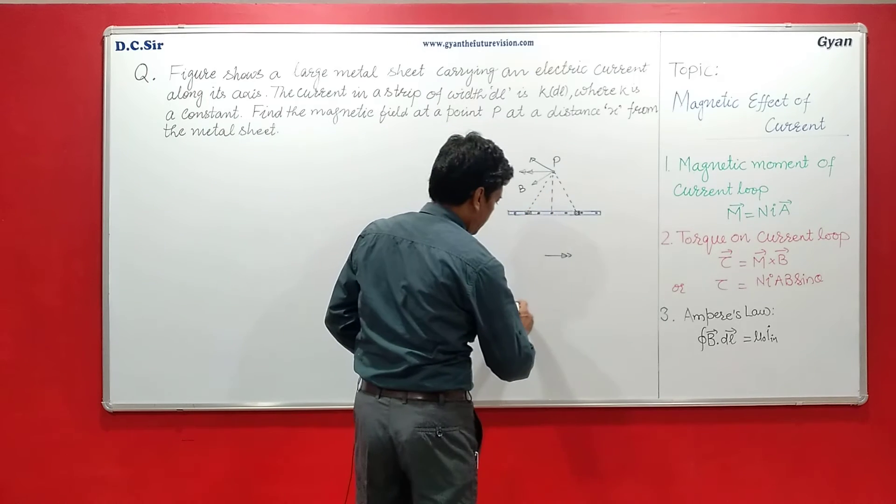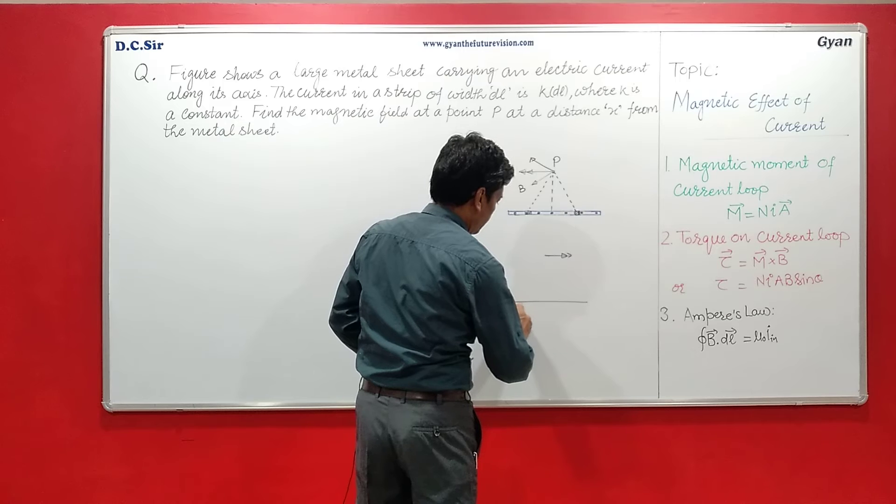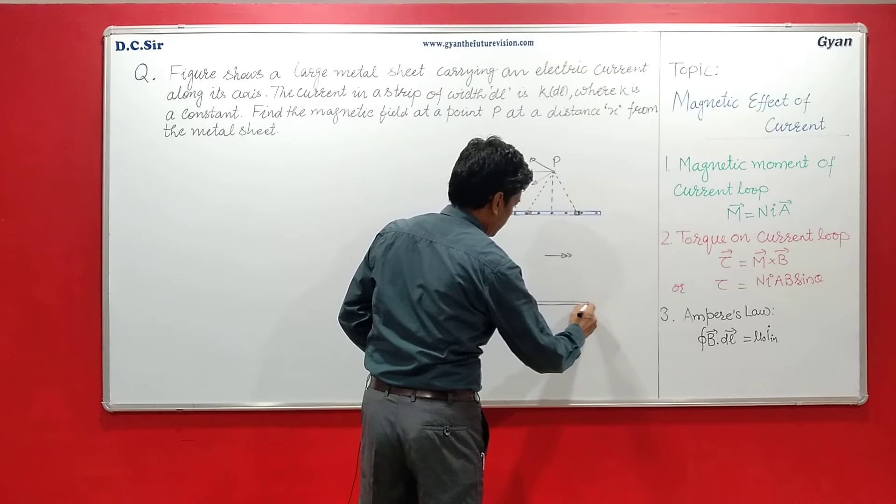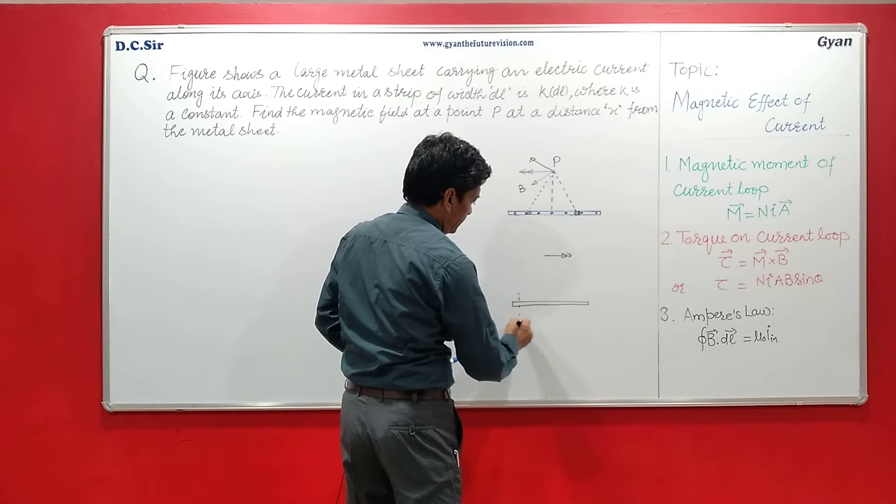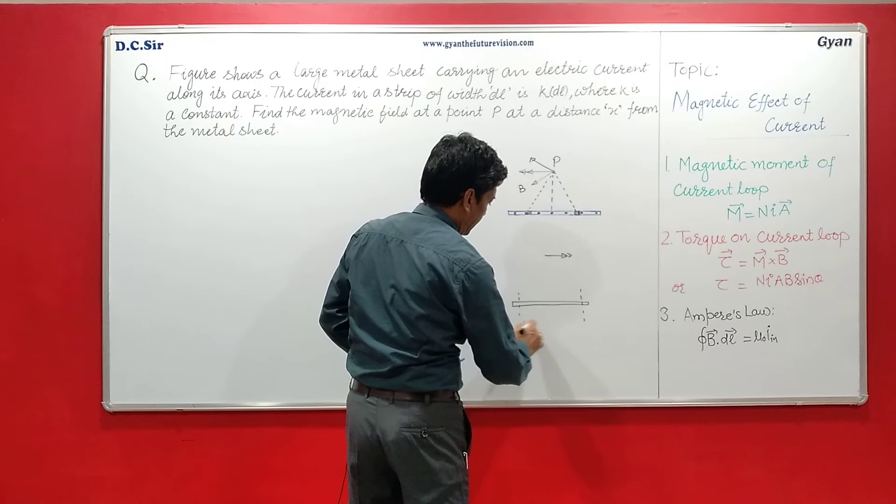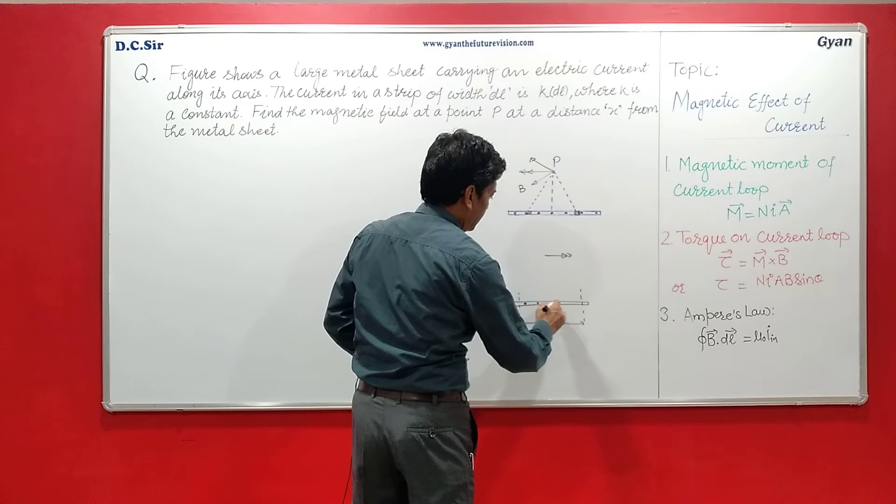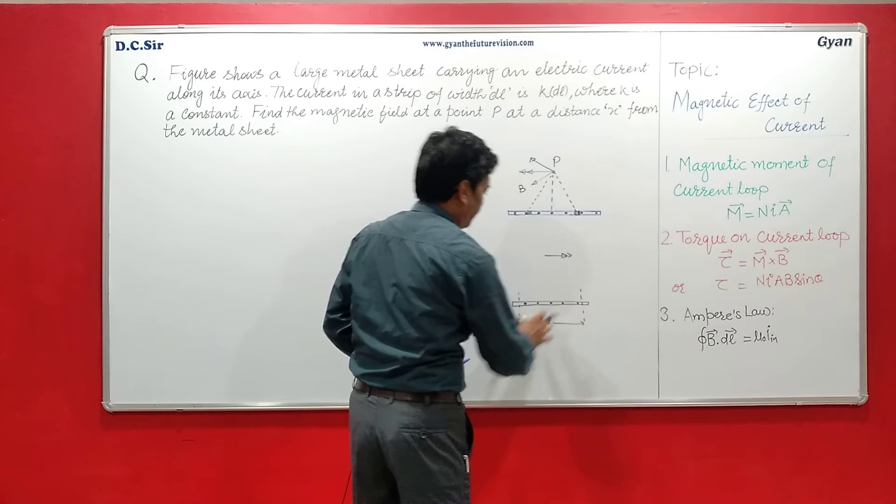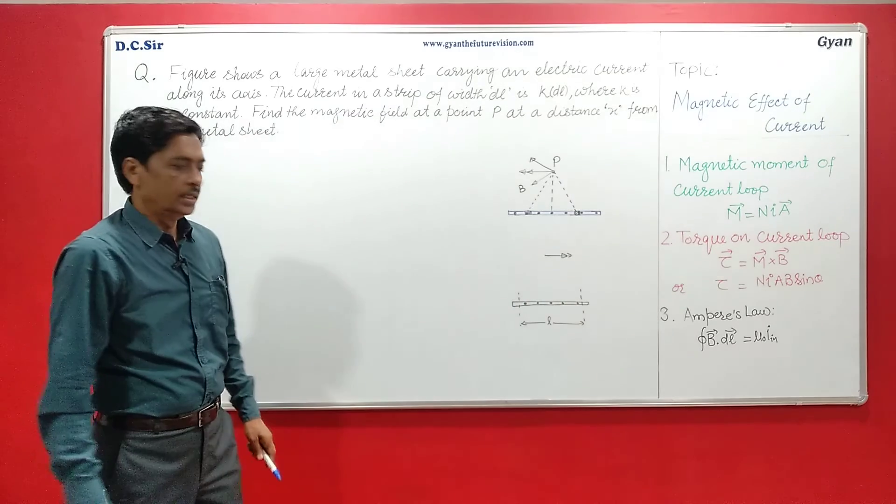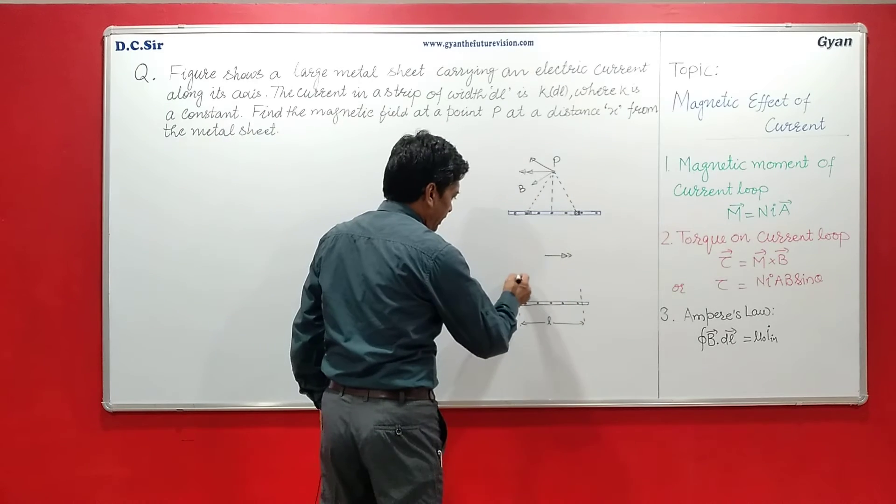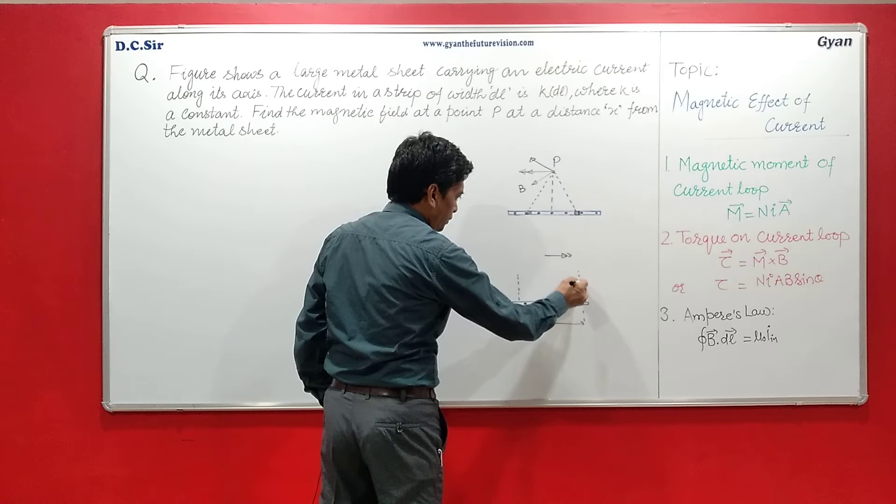Now, take the L width of the sheet. Here is the length L of the sheet. So current in this L width is equal to K·L.